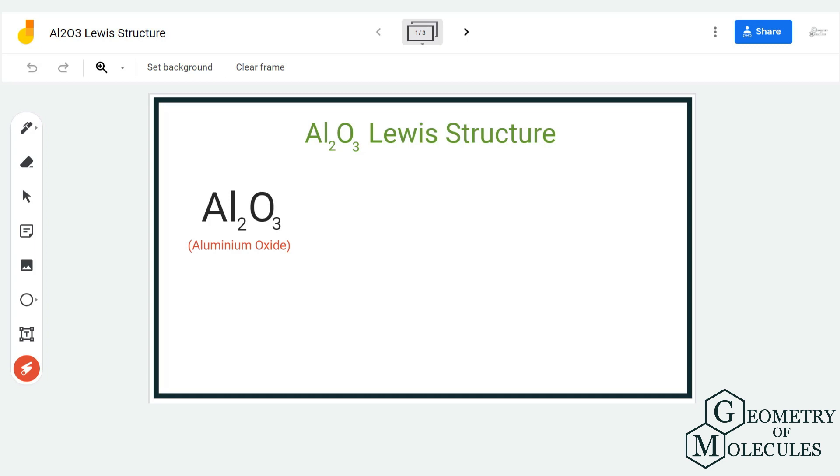Hi guys, today in this video we are going to look at the Lewis structure for Al2O3, which is also known as aluminum oxide. Now this compound is an ionic compound because it is made up of one metal, which is aluminum, and an oxide group, which is non-metal.